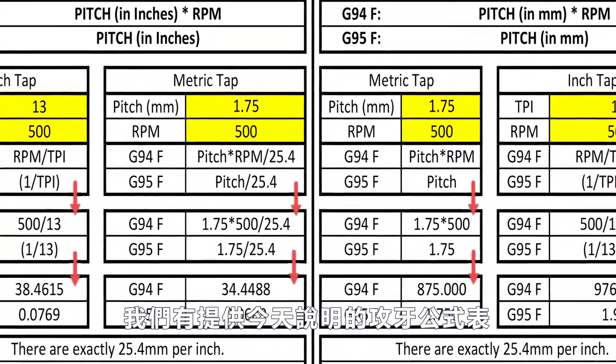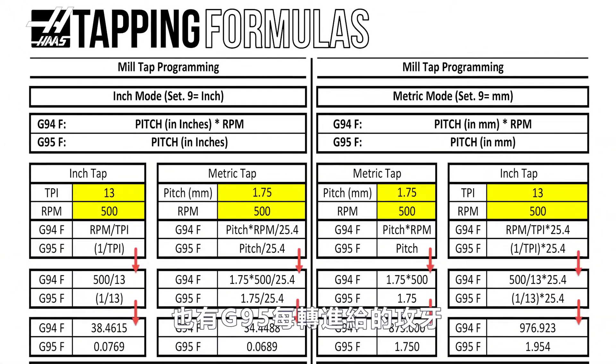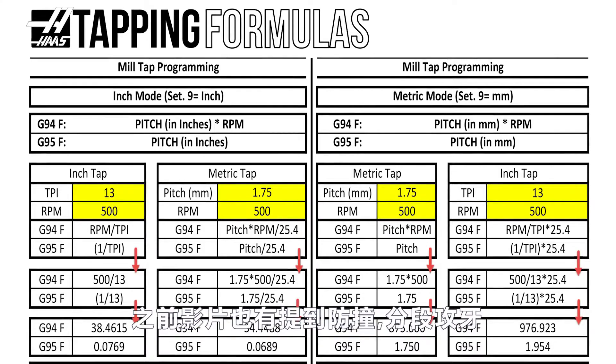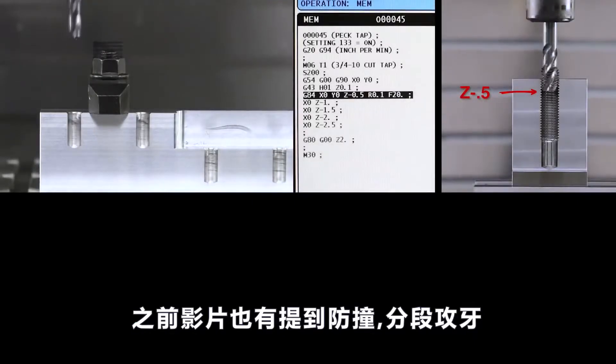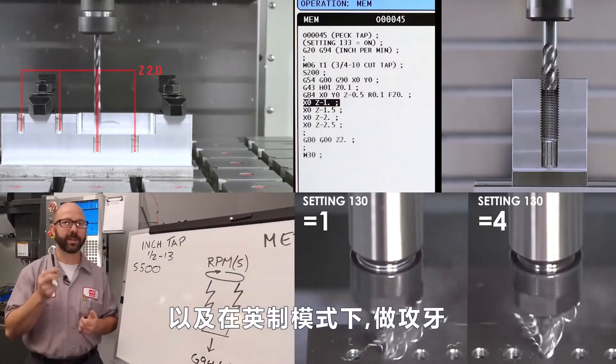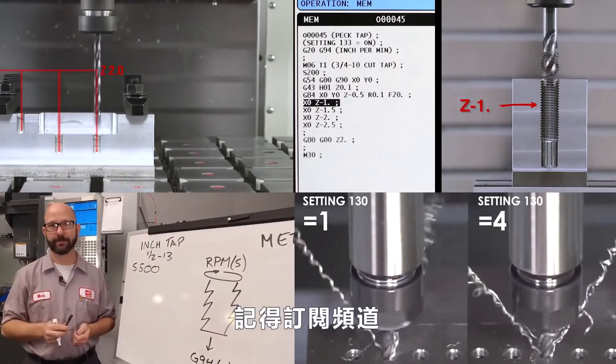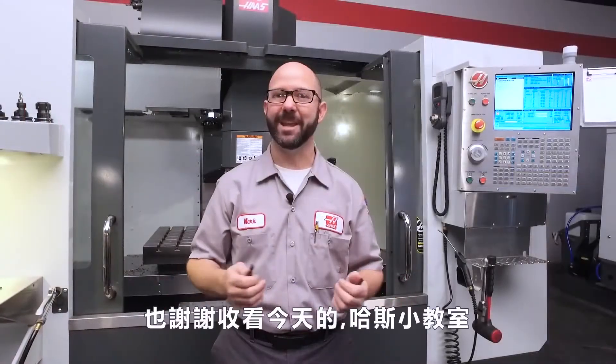Now, be sure to click on today's bonus content. We've created a tapping document that covers all the formulas we use today, as well as G95 feed per revolution tapping. We've also included links to videos that cover clearance planes, pec tapping, tapping faster with setting 130, and tapping in inch mode. Be sure to subscribe to these videos so you don't miss any of these tips as they're made. That's it, and thanks for watching this Haas Tip of the Day.